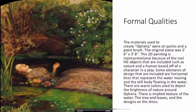Some elements of design that are included are horizontal lines that represent the water moving and the still body floating in the water. There are warm colors used to depict the brightness of nature around Ophelia. There is implied texture of the water, the tree and leaves, and the design on the dress.